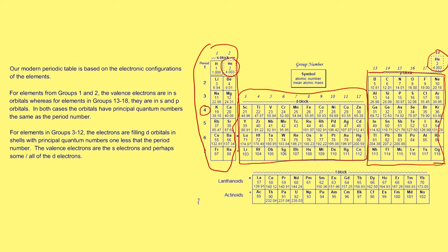It's worth noting that the principal quantum number, or the period number, is one more than the subshell that the electrons are going into. So in the first period of the d block, the electrons are going into the 3d subshell, where the number three is one less than the principal quantum number, which is four in this case.